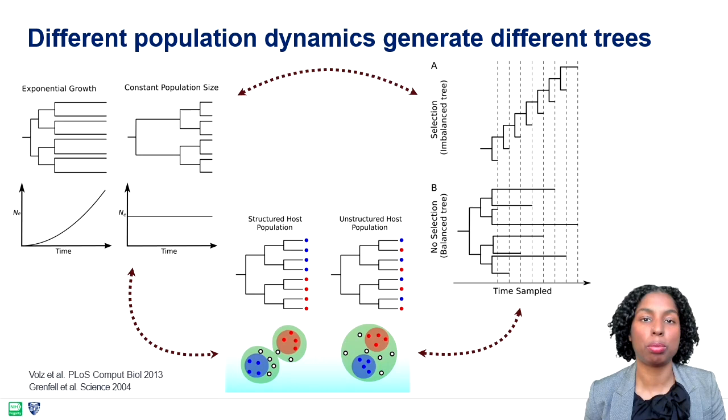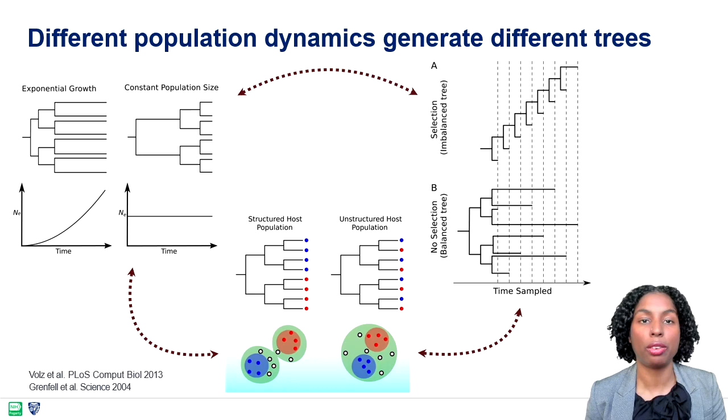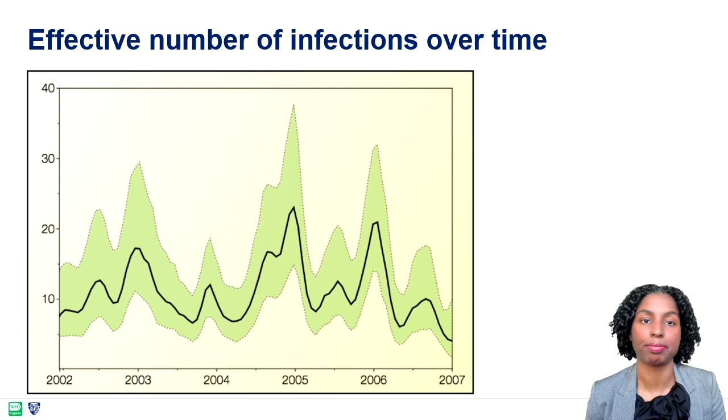Lastly, the topology of the phylogenetic tree can also give us an indication of the structure of the population. In this case, we have two hosts, red and blue, and we see that in the left tree, pathogens tend to cluster by host, whereas in the right tree, pathogens tend to cluster irrespective of host sampled.